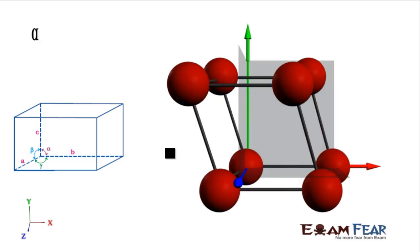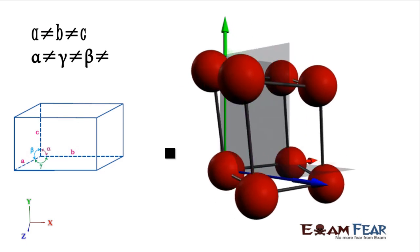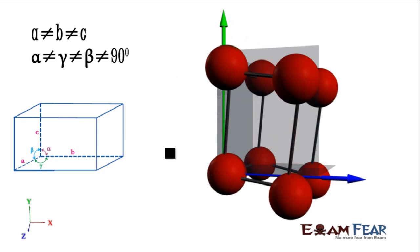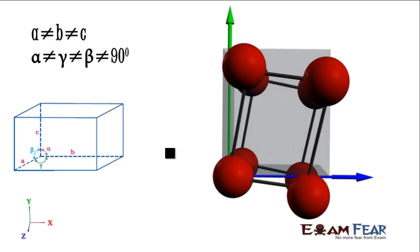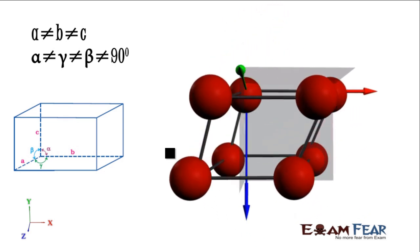The next is simple triclinic. In simple triclinic, sides are not equal and angles are also not equal. A is not equal to B, is not equal to C. Alpha is not equal to beta, is not equal to gamma, and they are not even equal to 90 degrees. This is very haphazard and has only a simple structure where atoms are on the corners.